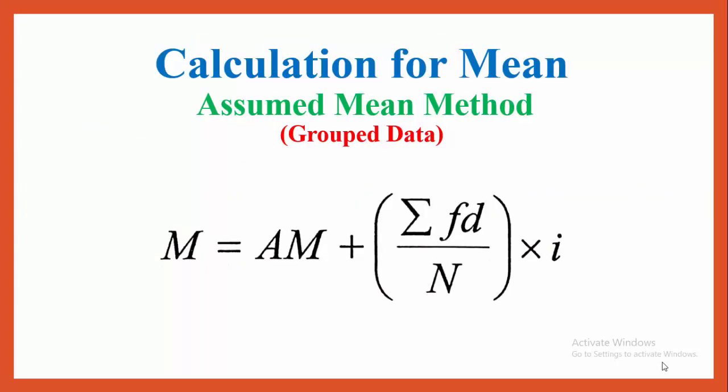Calculation of mean — assume mean method: when grouped data is given, the formula for calculating mean is M = AM + (Σfd / N) × i.